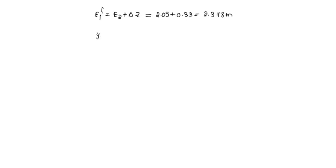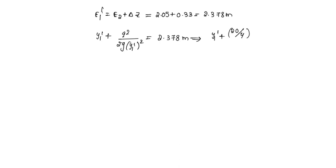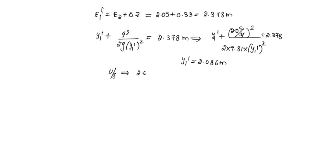Solving Y1' + q² / (2g × Y1'²) = 2.378, where q = Q/B = 20/4 = 5 m²/s: Y1' + 5² / (2 × 9.81 × Y1'²) = 2.378, giving Y1' = 2.086 meters. So the upstream water depth rises to 2.086 meters and the downstream depth equals the critical depth Y2 = 1.366 meters.